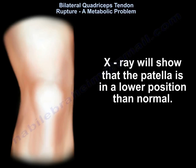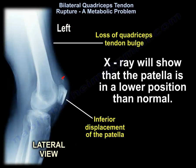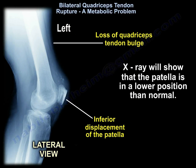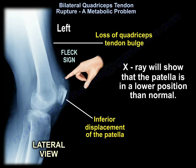X-ray will show that the patella is in a lower position than normal, so there will be inferior displacement of the patella. On X-ray, you may also find loss of the quadriceps tendon bulge and the fleck sign.